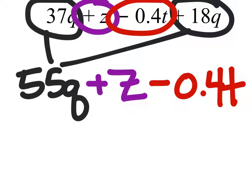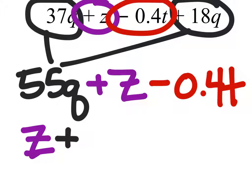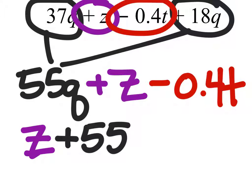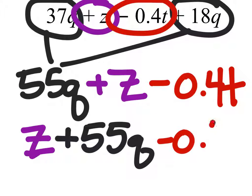Now if the order of this is just a little bit different, you could have, for example, z plus 55q minus 0.4t, or some mixture thereof.